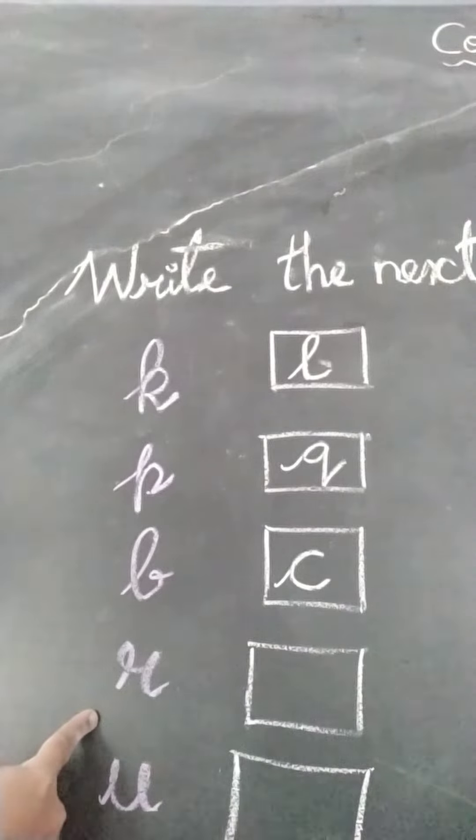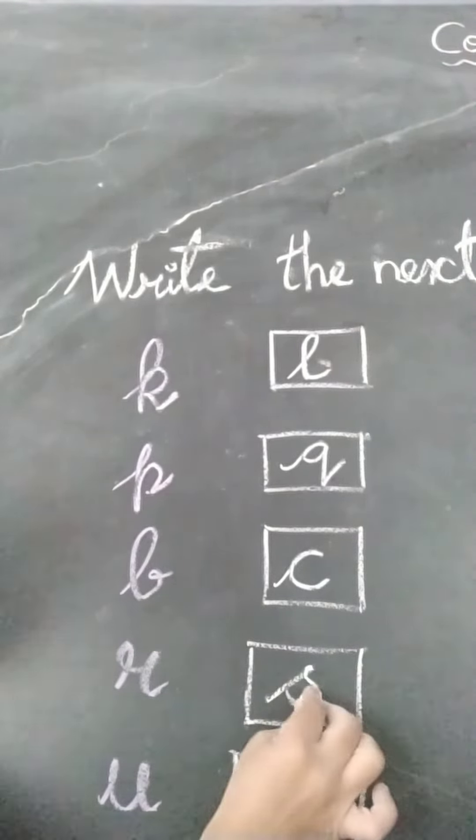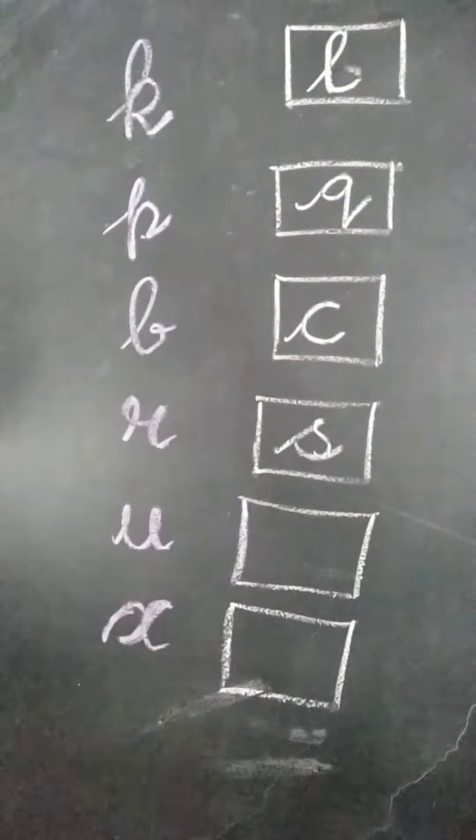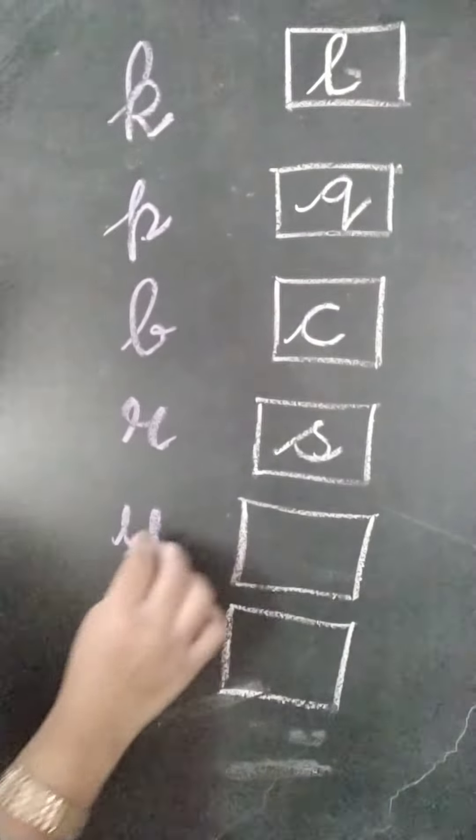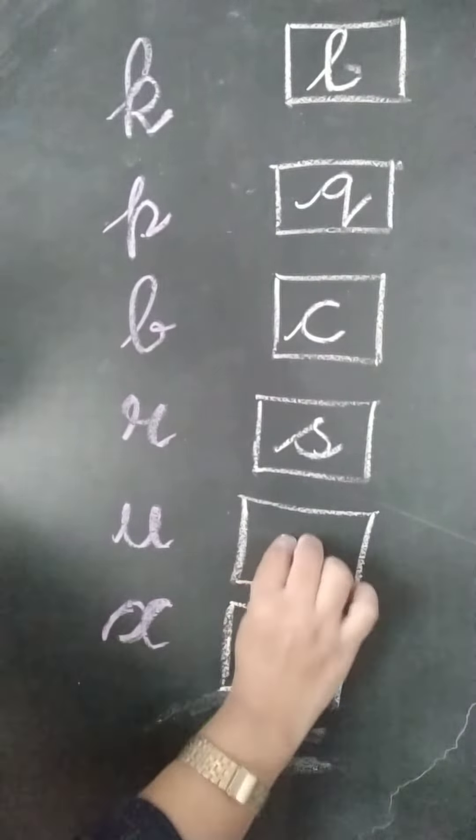The next alphabet is R. After R comes S. The next alphabet is U. After U, cursive alphabet is V.